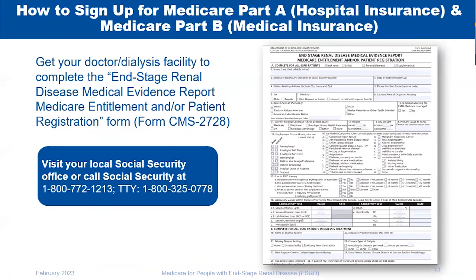This is the form you would submit to Social Security — it is called the CMS 2728 form. You submit it to Social Security because Social Security is the agency that determines your enrollment and processes your eligibility in Medicare. Your doctor or dialysis facility fills it out and works with you to turn it in to Social Security. It's a standard process for them, so it's not something you need to do by yourself. This helps you enroll and get coverage under both Medicare Part A and Part B.